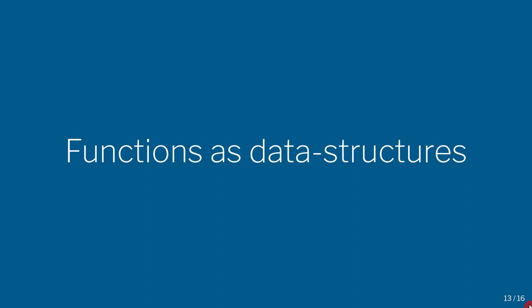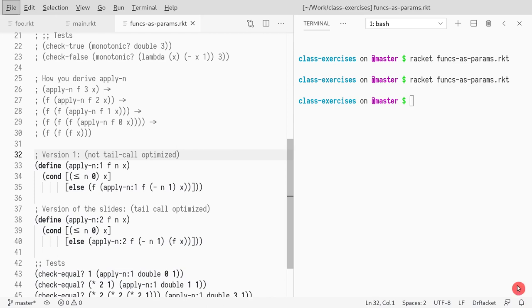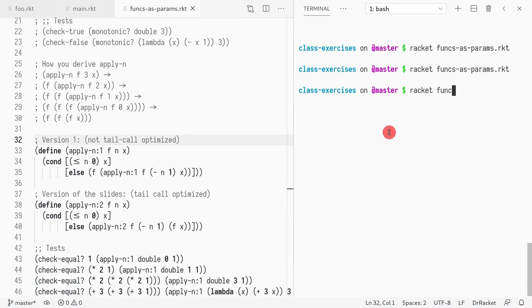We're now going to cover the idea of using functions as data structures. This is really an implication of being able to capture whatever values are declared above when you create a function. We saw that when we introduced the idea of declaring nested functions, and now let's look at Racket functions as data structures.